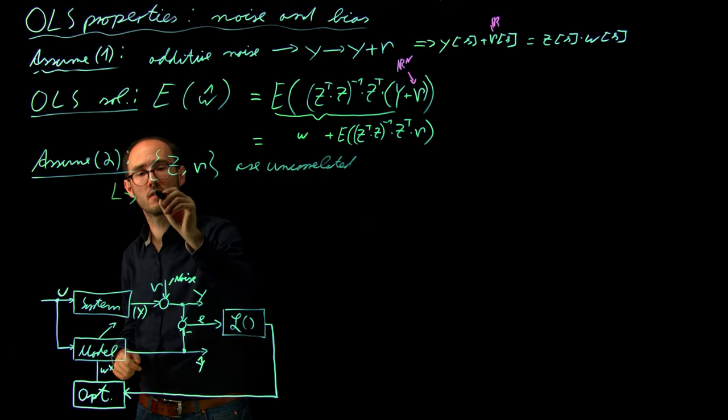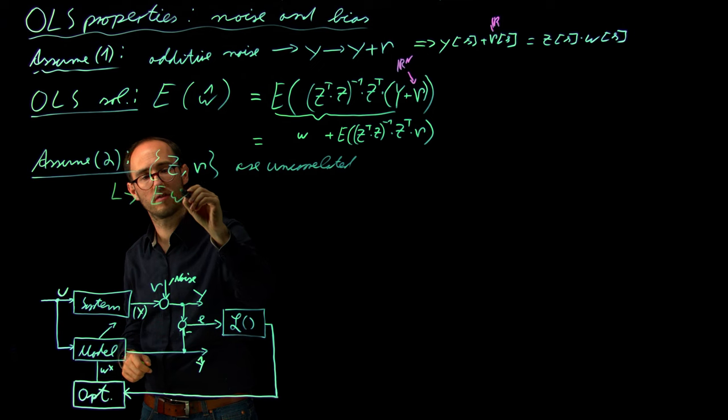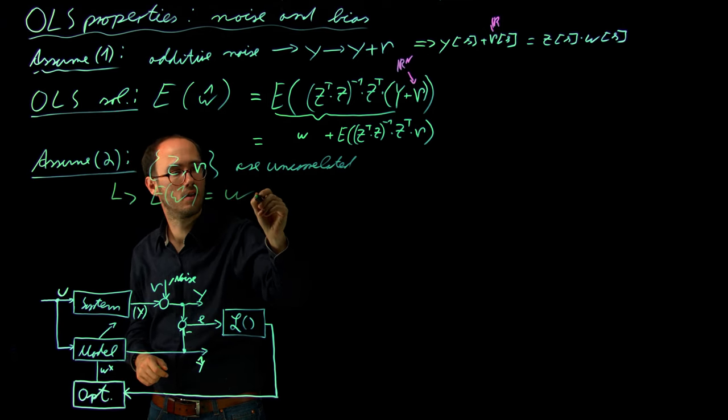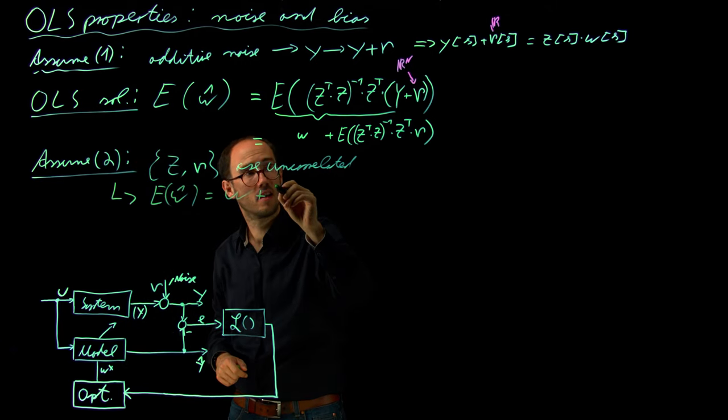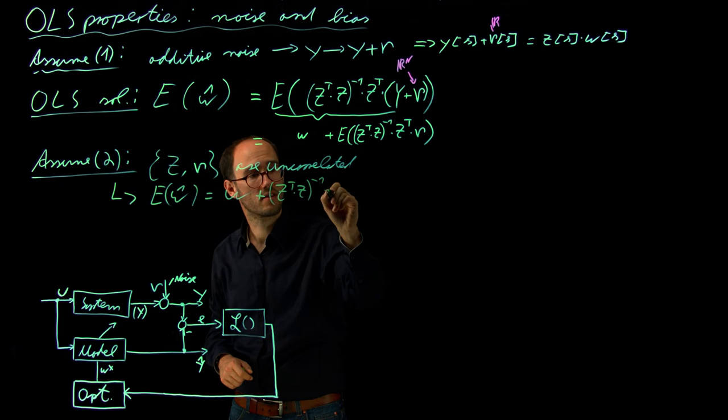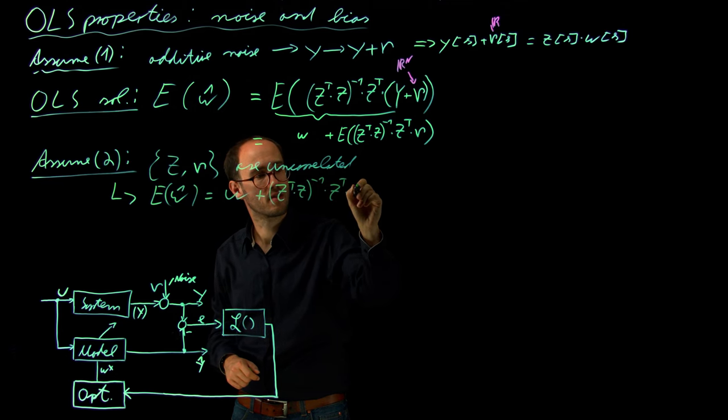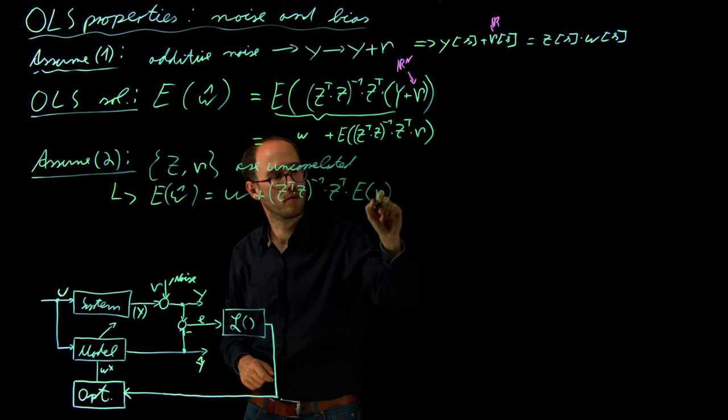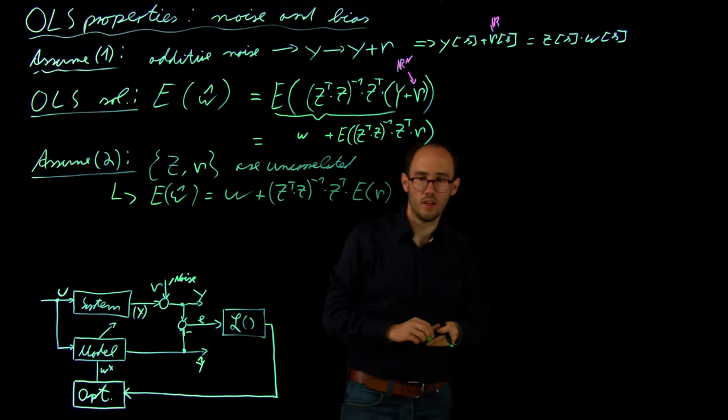And therefore, the expectation is just applied to the noise term back here. So therefore, with this assumption, the expectation of W hat becomes W plus Z transpose times Z inverse times Z transpose times the expectation of Mu.